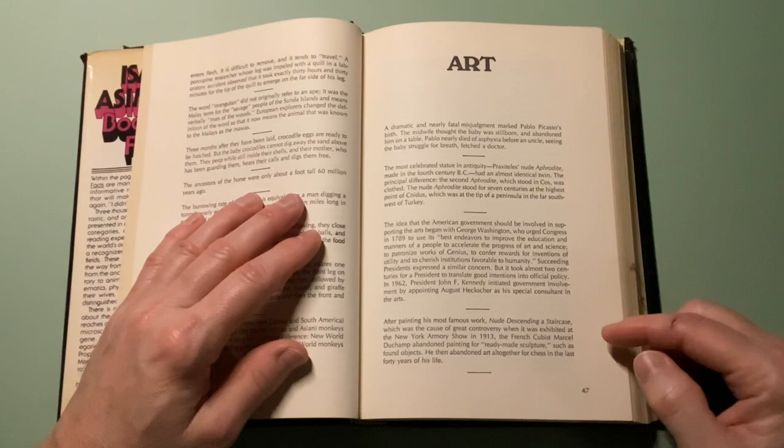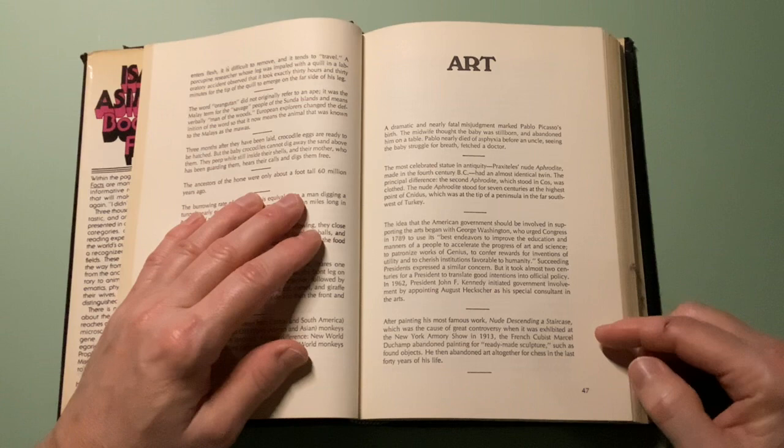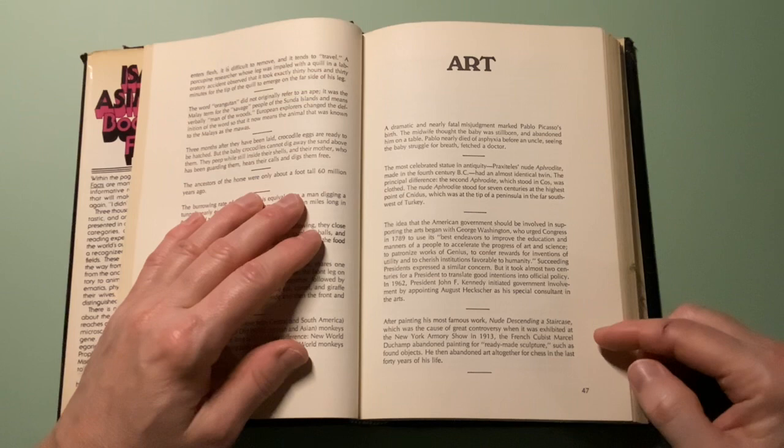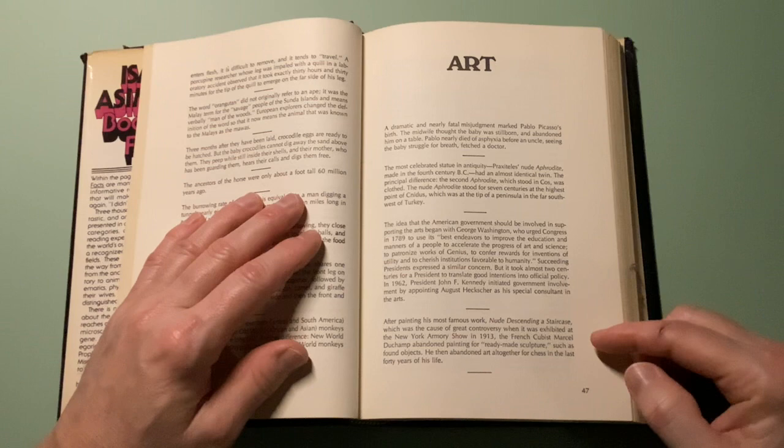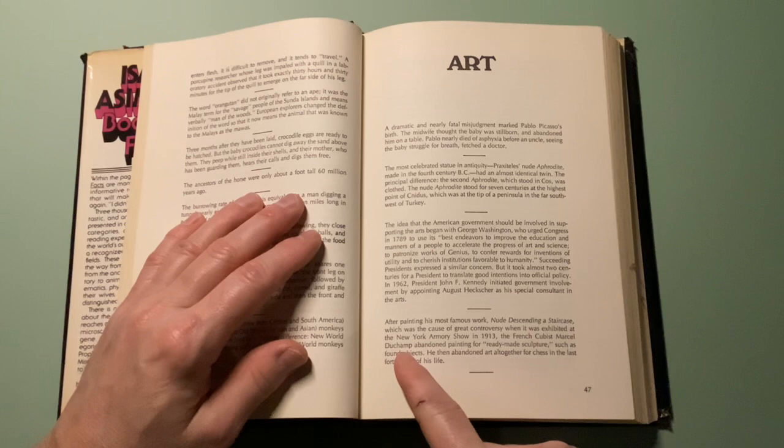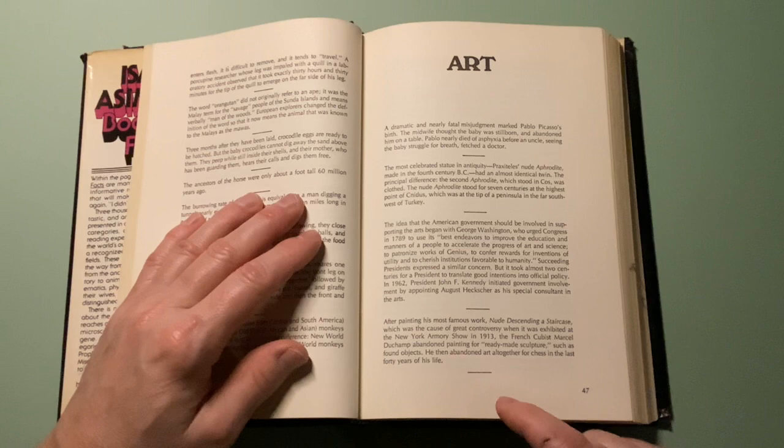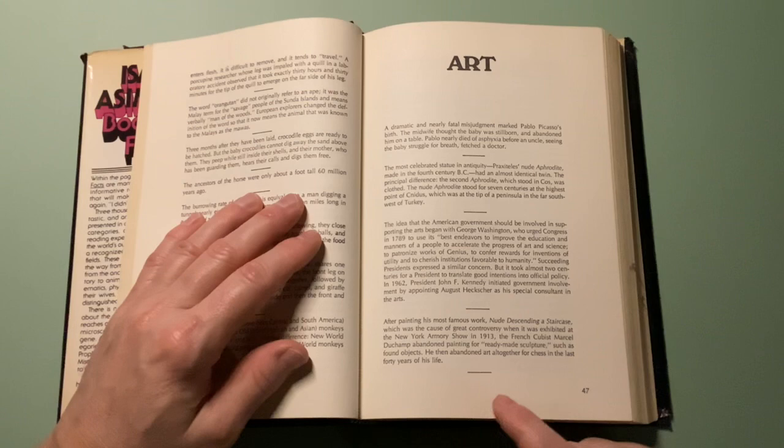In August 1962, President John F. Kennedy initiated government involvement by appointing August Heckscher as his special counsel in the arts. After painting his most famous work, Nude Descending a Staircase, which caused great controversy when exhibited at the New York Armory Show in 1913, the French cubist Marcel Duchamp abandoned painting for ready-made sculpture, such as found objects. He then abandoned art altogether for chess in the last 40 years of his life.